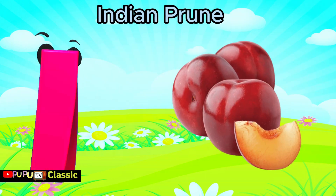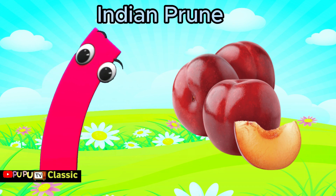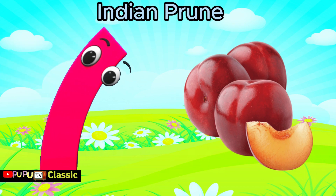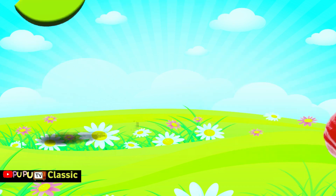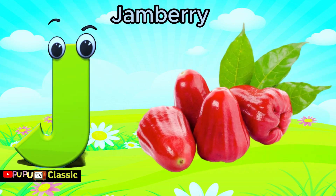I is for Indian prune, e, Indian prune. J is for jamberry, j, jamberry.